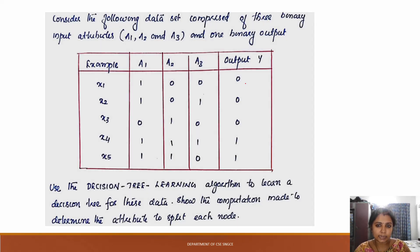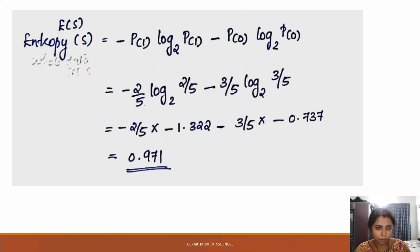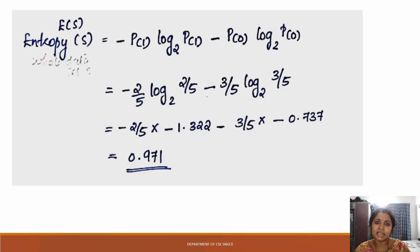If you look at this: 2 instances are positive (label 1) and 3 are negative (label 0). So probability of positive is 2 divided by 5, and probability of negative is 3 divided by 5. Therefore: minus (2/5) log base 2 of (2/5), minus (3/5) log base 2 of (3/5). This gives the answer.